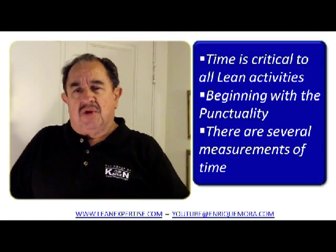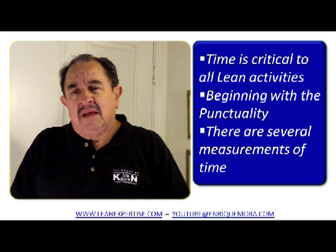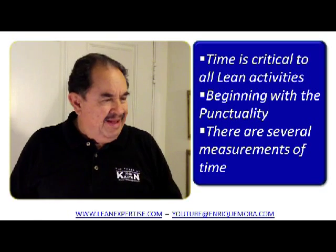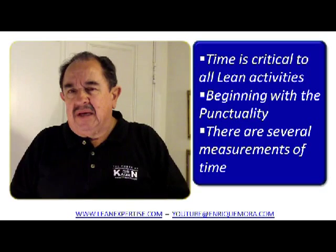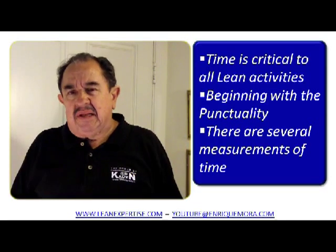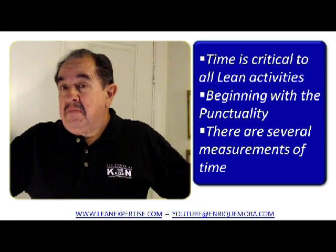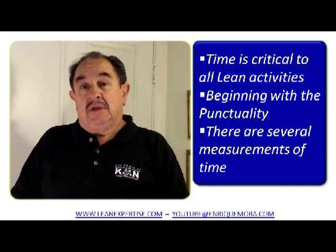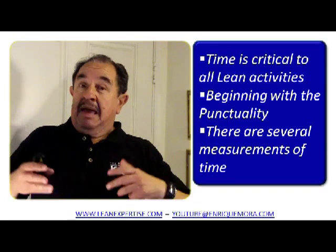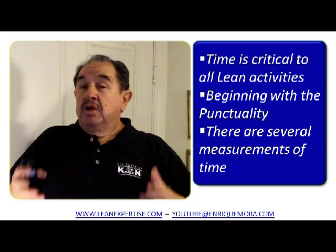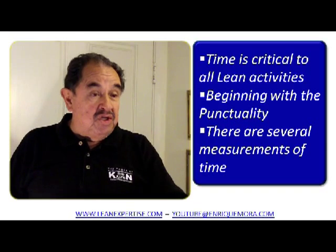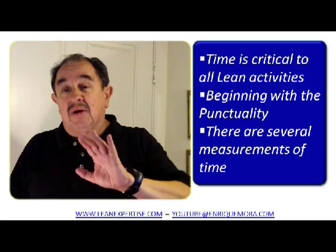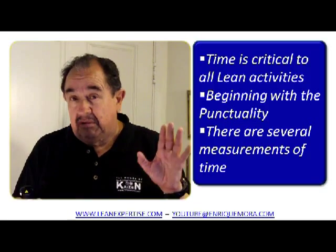We are going to talk today about a subject that was suggested through our emails from viewers on YouTube, and this is about time. Time is a critical element in lean manufacturing — all lean activities can be measured only through time. One important thing we need to start doing is being very punctual, because by being punctual we assure the utilization of our time and the respect of other people's time.